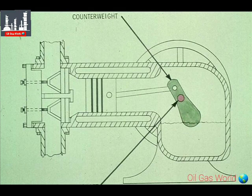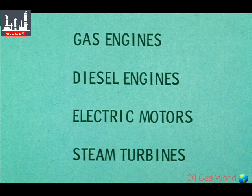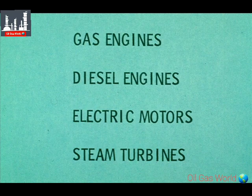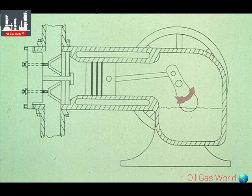Here is a simple illustration of a compressor. On the right is the counterweight, mounted on the driveshaft. The driveshaft is connected to the driver for the compressor. Reciprocating compressors can be driven by gas engines, diesel engines, electric motors, steam turbines, or other possible sources of power. The drive isn't really important to the operation of the compressor.